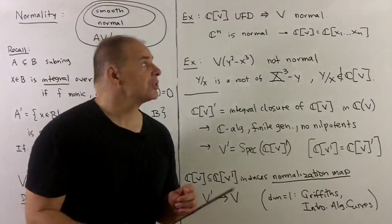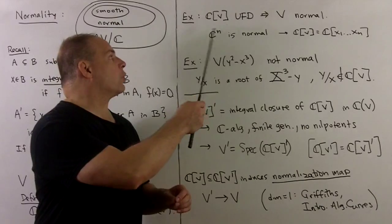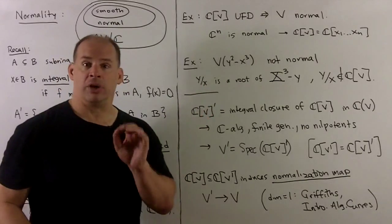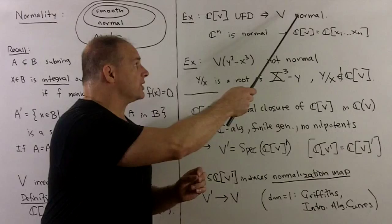For a large source of examples, we note if we have a coordinate ring that's a UFD, it's integrally closed, which means that our V is normal in this case.